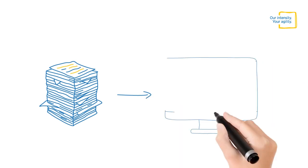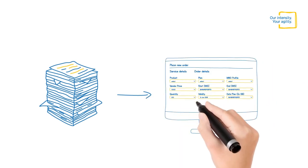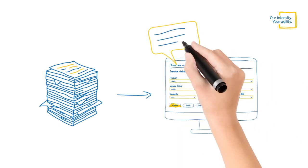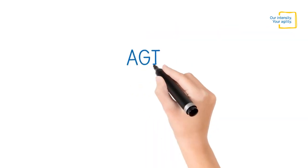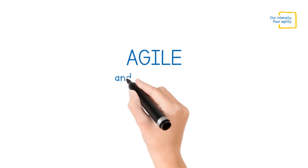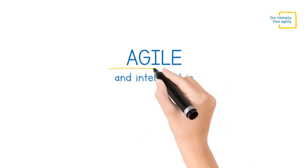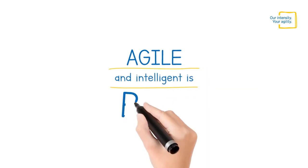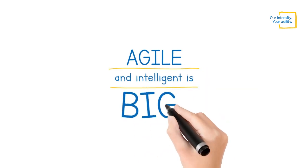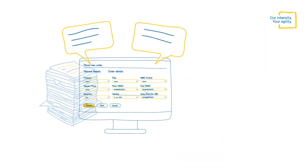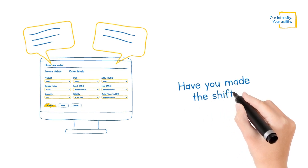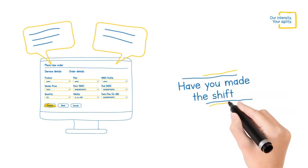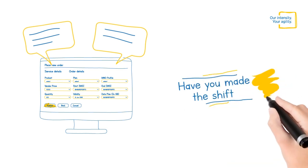Forms have evolved from paper to digital, and now agile and intelligent. The evolution is real — agile and intelligent is big and how. But have you really made the shift to intelligent digital forms?